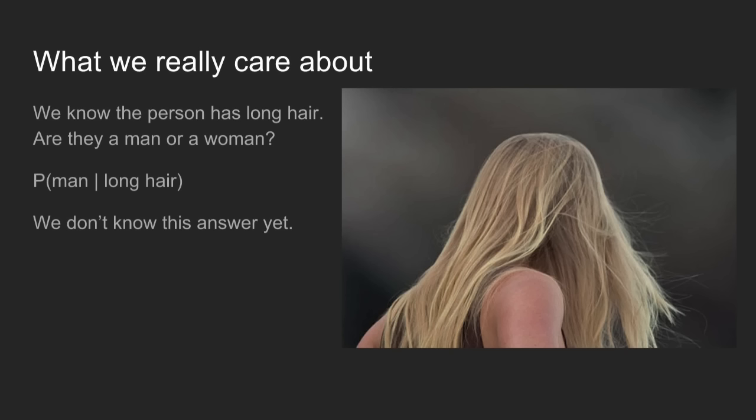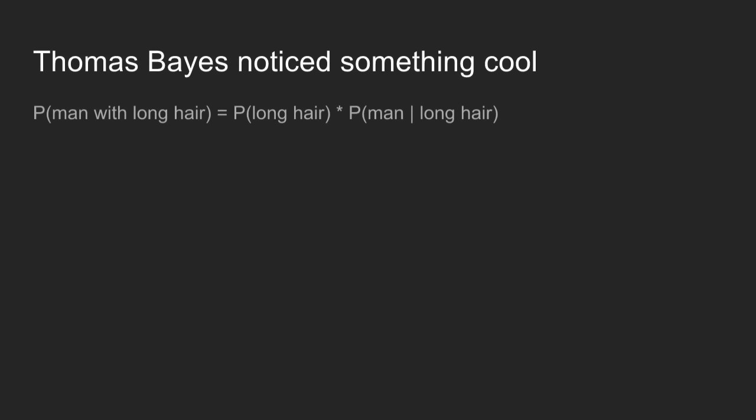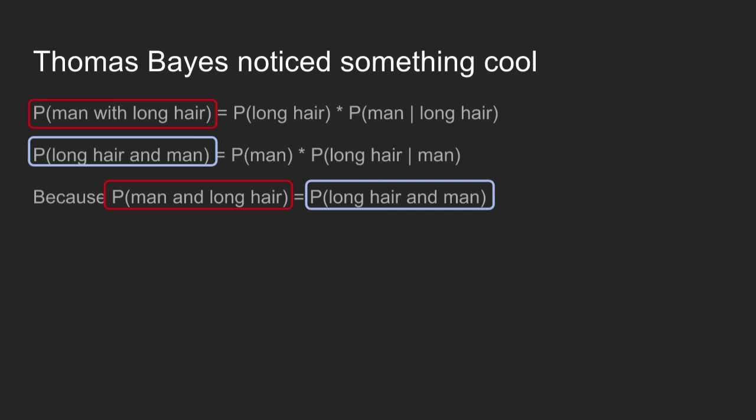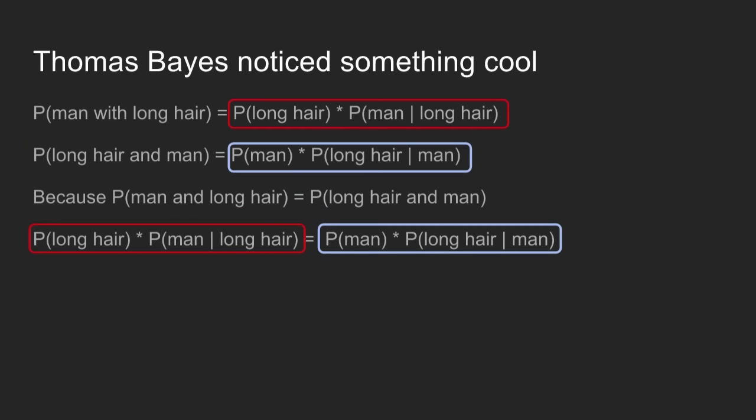We know that this person has long hair. What's the probability they are a man or a woman? This is a conditional probability, but it's the reverse of the one we know — and we don't know how to answer this yet. This is where Thomas Bayes comes in. He noticed you can calculate the joint probability that someone is a man and has long hair, and also the joint probability that someone has long hair and is a man — different formulas, but joint probabilities don't care about order, so these two things are equal.